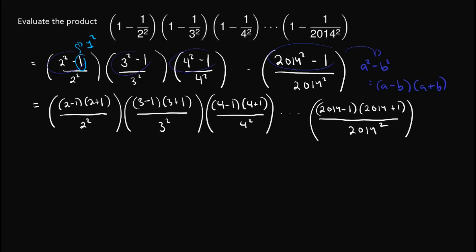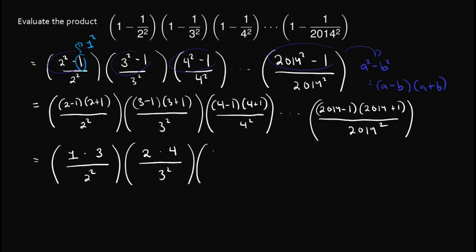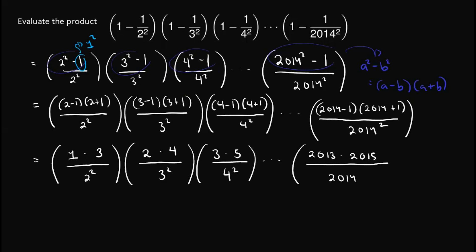Simplifying the numerator terms gives us: (1 times 3) over 2 squared, times (2 times 4) over 3 squared, times (3 times 5) over 4 squared, up until (2013 times 2015) over 2014 squared.